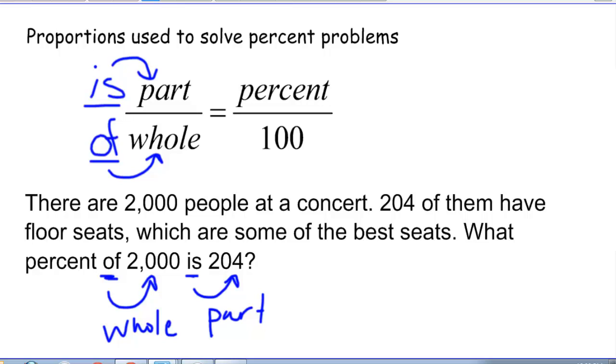Once we know what the part and the whole are, and it's possible that you'll be trying to find the part or the whole in a problem like this, that's okay. We can always solve for any number in a proportion. So we've identified the 2,000 as the whole, that's the total number of people coming to the concert.